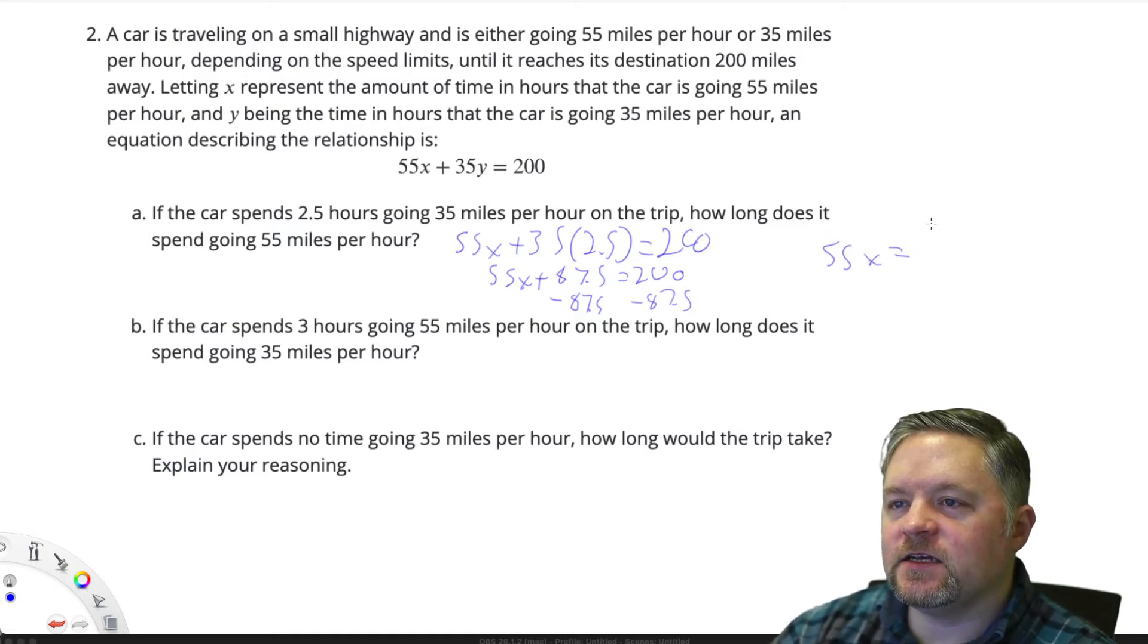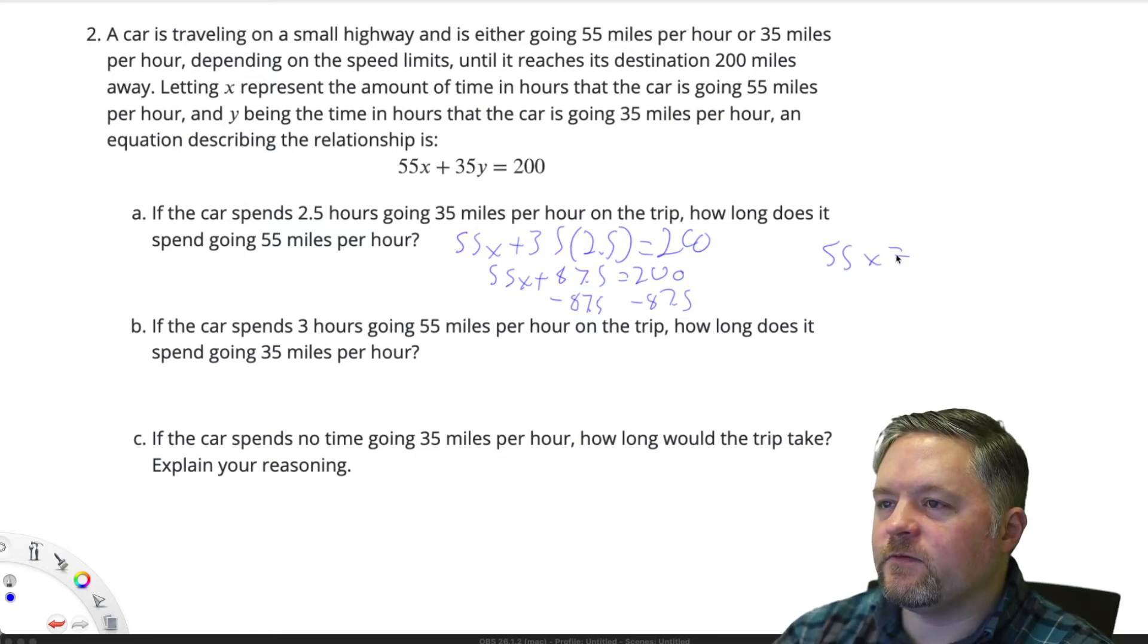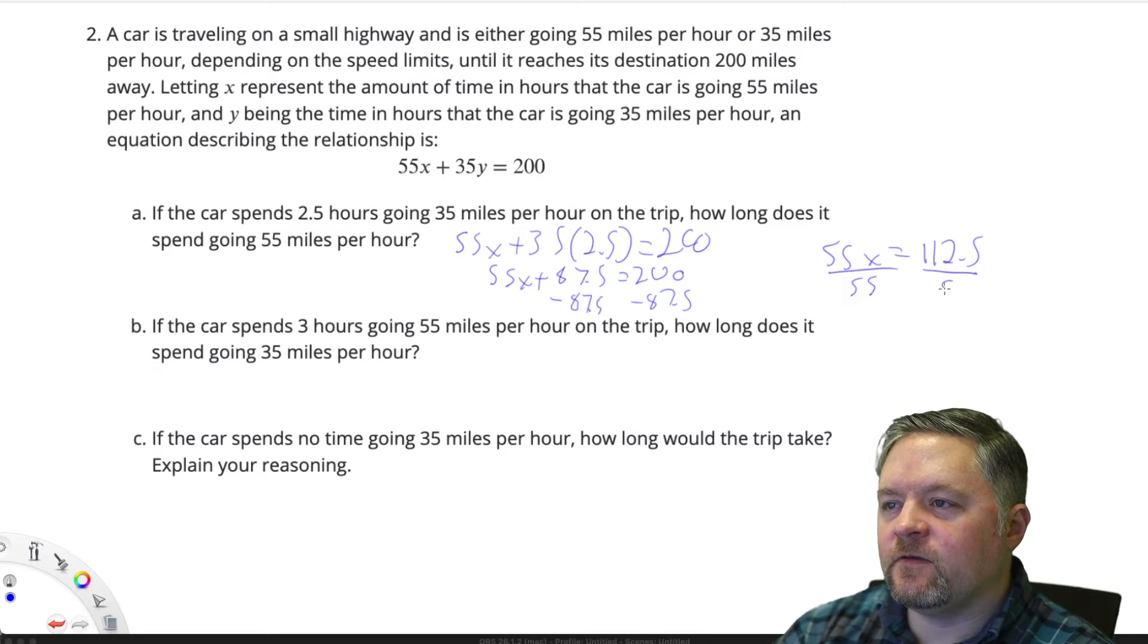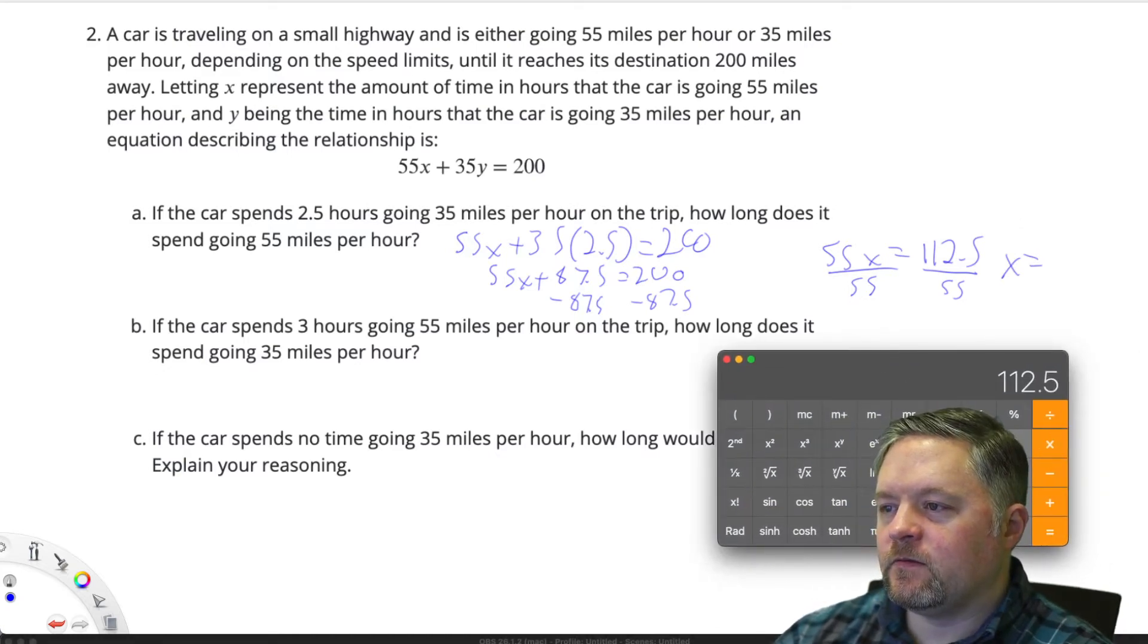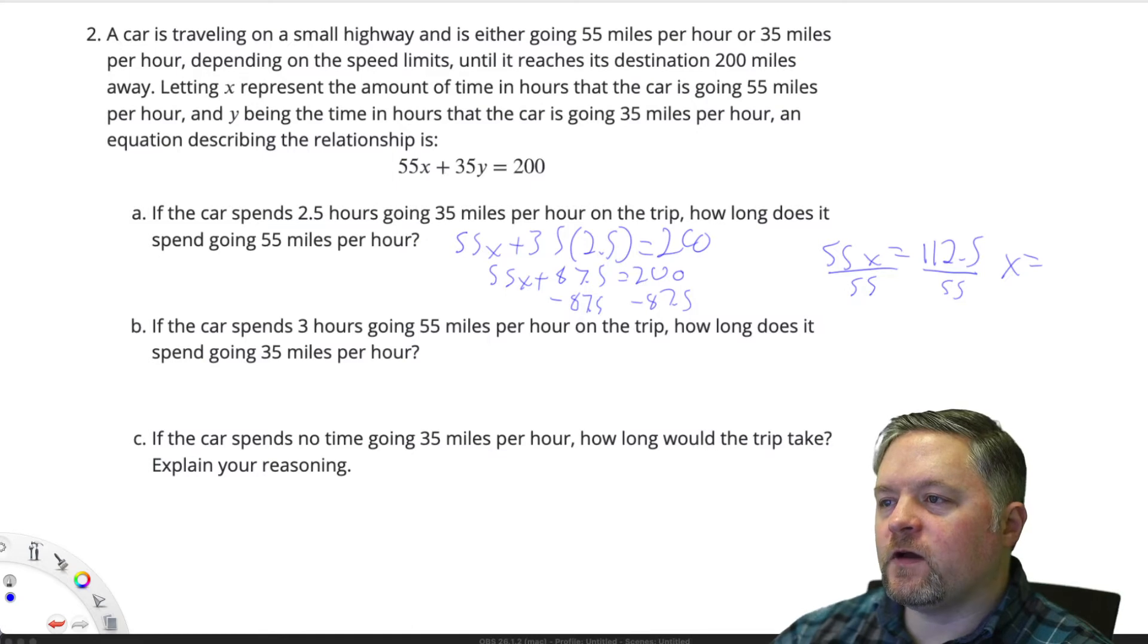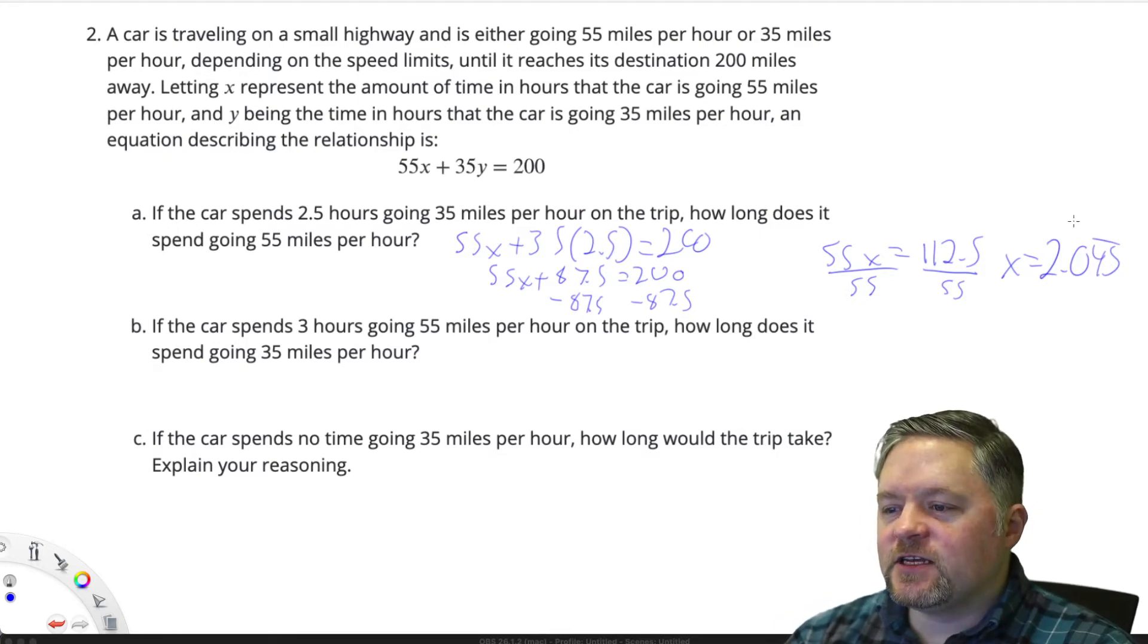55x equals 200 minus 87.5 is 112.5. Divide each side by 55, and x equals 2.045 repeating. If they spend 2 and a half hours going 35 miles per hour, they spend just a little tiny bit over 2 hours going 55 miles per hour.